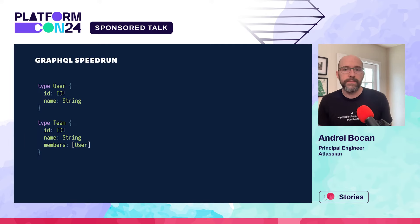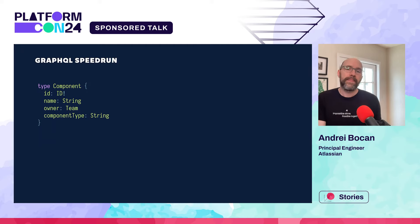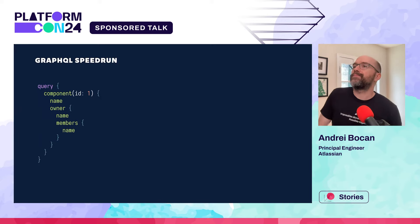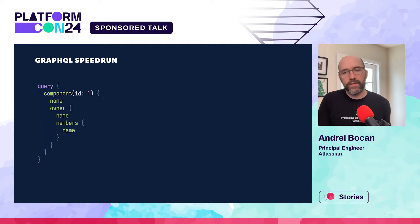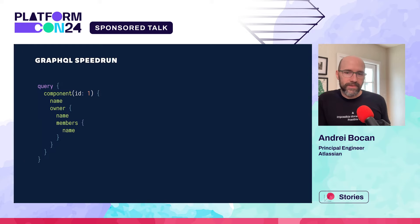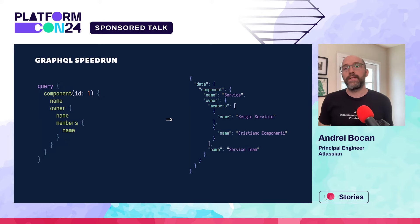Let's get to the graph bit of GraphQL. A GraphQL schema can define relationships between the various types. We're going to define a user type and a team type that has a field called members, which is a list of users. Adding this to our component type, we now have the field owner of type team. Querying it, we'd ask for component ID one, want the name of the component, ask for the owner — the team's name and each member's name as well — and sure enough, we get everything back just as expected. Congratulations, you now know enough GraphQL to be dangerous. You can see how this allows clients to define exactly the data they need across multiple services and navigate a large graph of dependent entities.